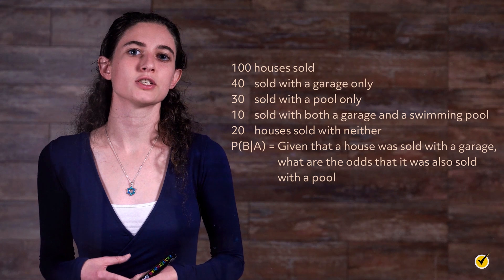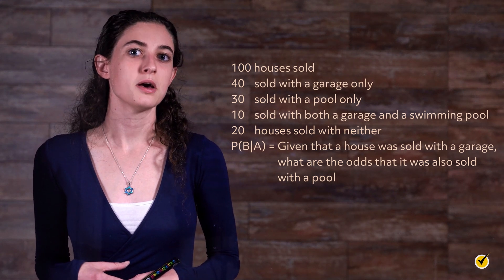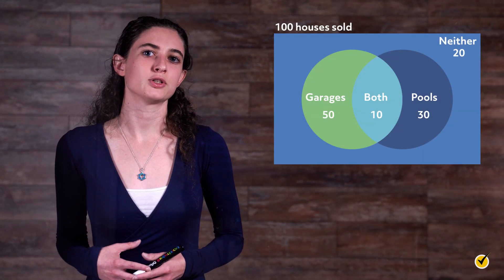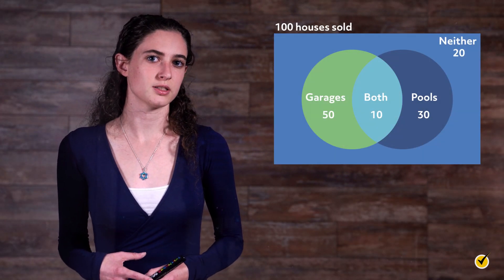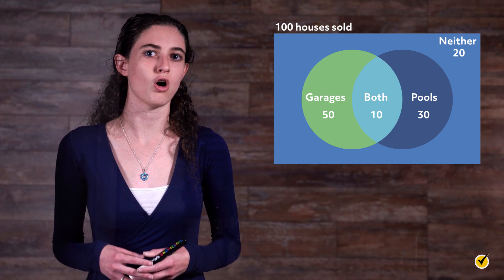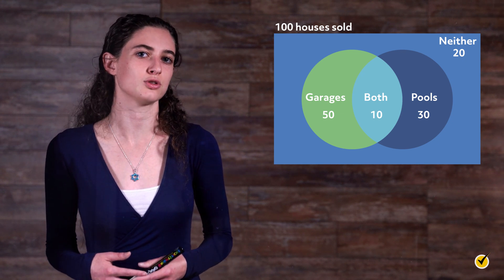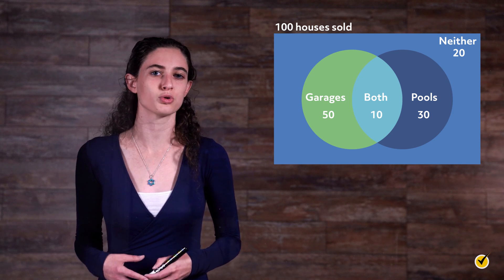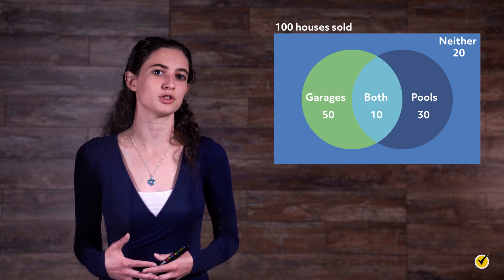It is not immediately obvious what to do with all that information, but if we draw it as a Venn diagram, we can make more sense of it. We can now see the overlap between the houses sold with garages and the houses sold with pools, all within the larger set of houses sold. It's easier to see now that of the 50 houses that were sold with a garage, 10 of them also had a swimming pool.